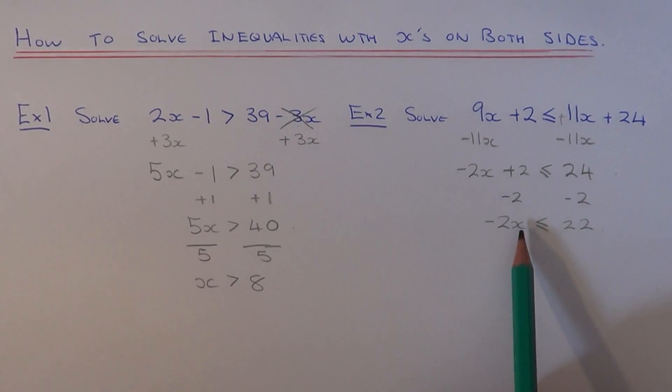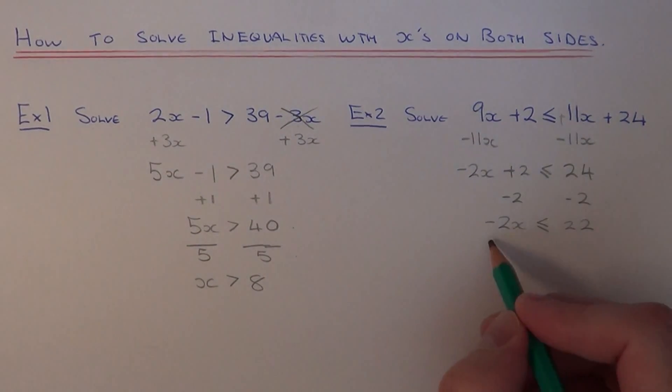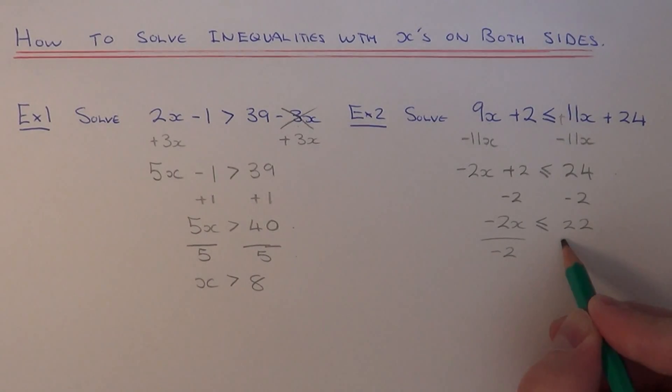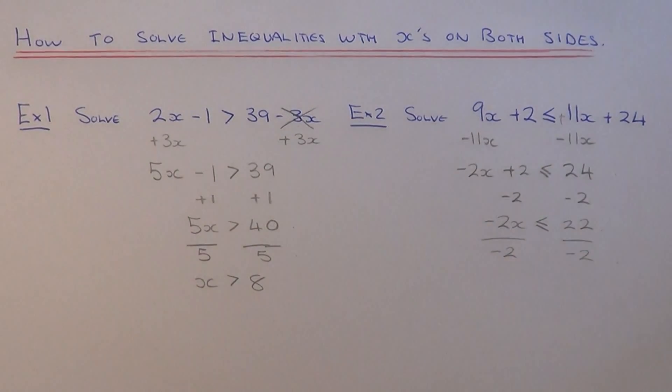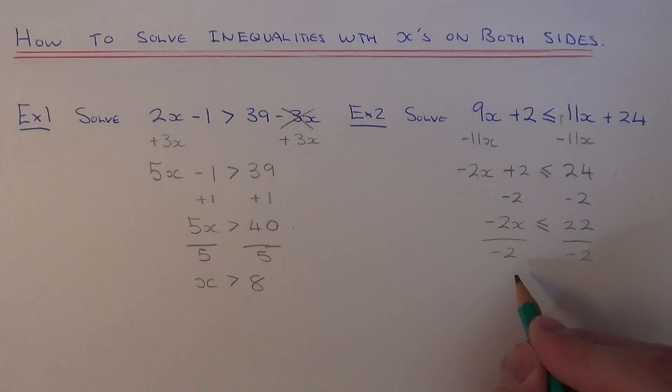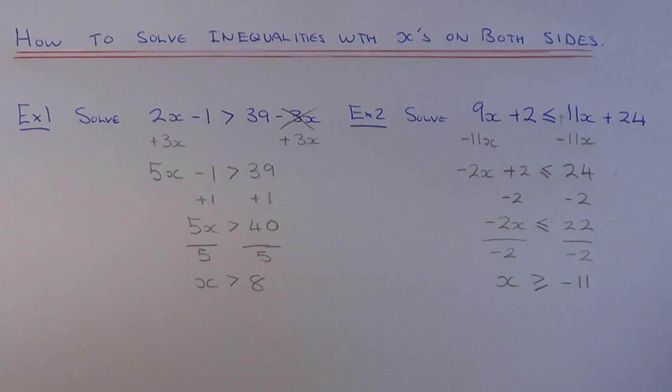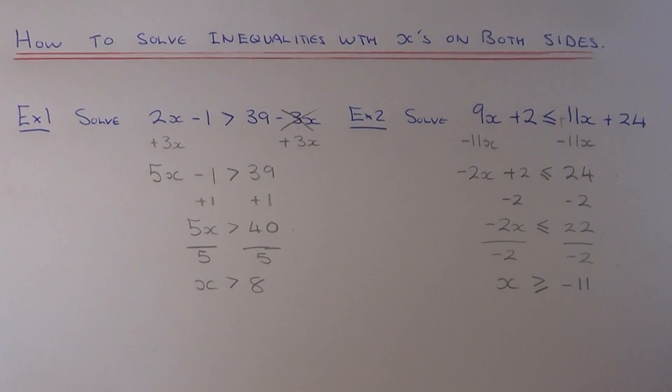So this is the bit where we've got to be careful now. x is being multiplied by minus 2, so the opposite is to divide by minus 2. Remember what I said earlier: if you have to divide by a negative number, the inequality sign has to be turned around. So the less than or equal to becomes more than or equal to. And 22 divided by minus 2 is minus 11. So you end up with the final answer, x is more than or equal to minus 11. Thanks for watching.